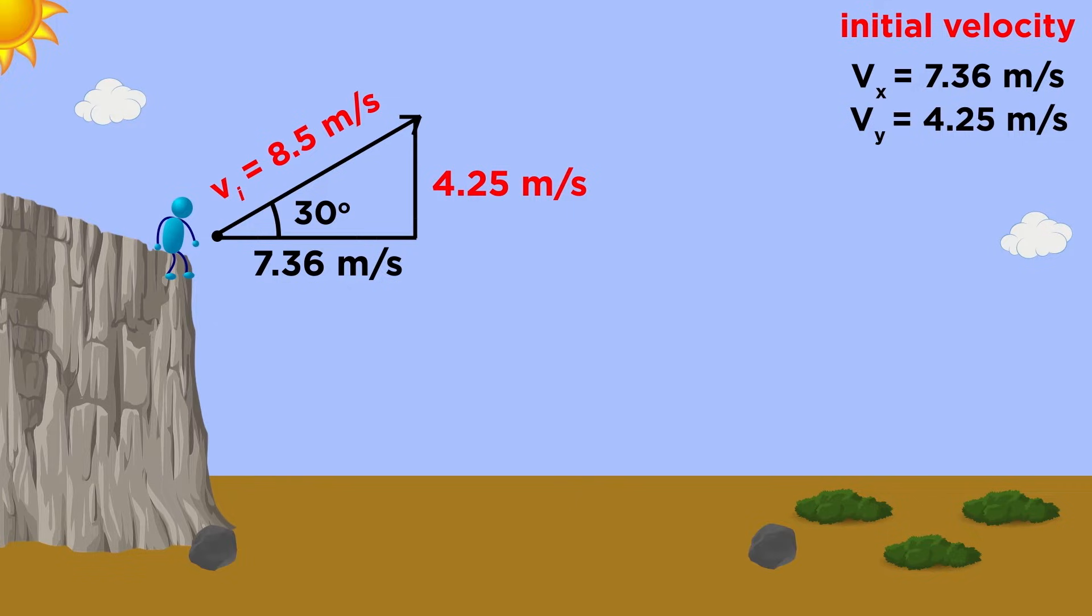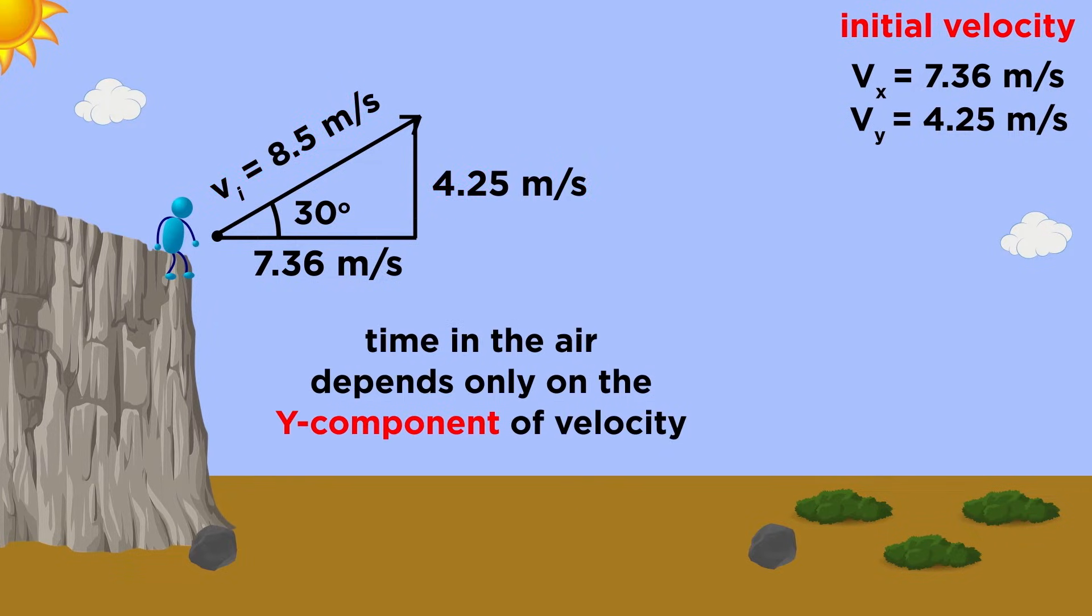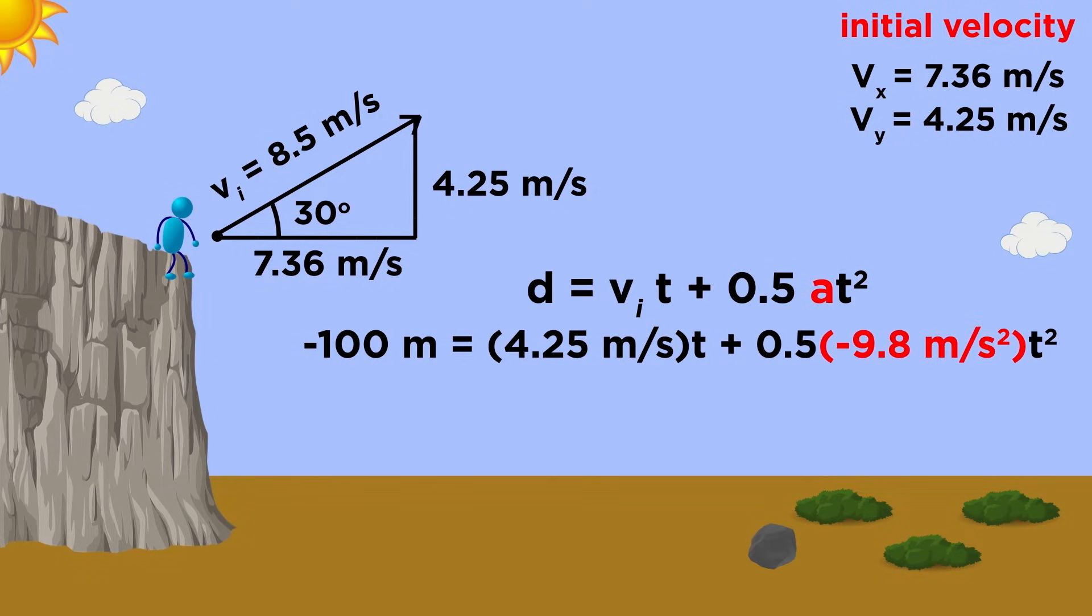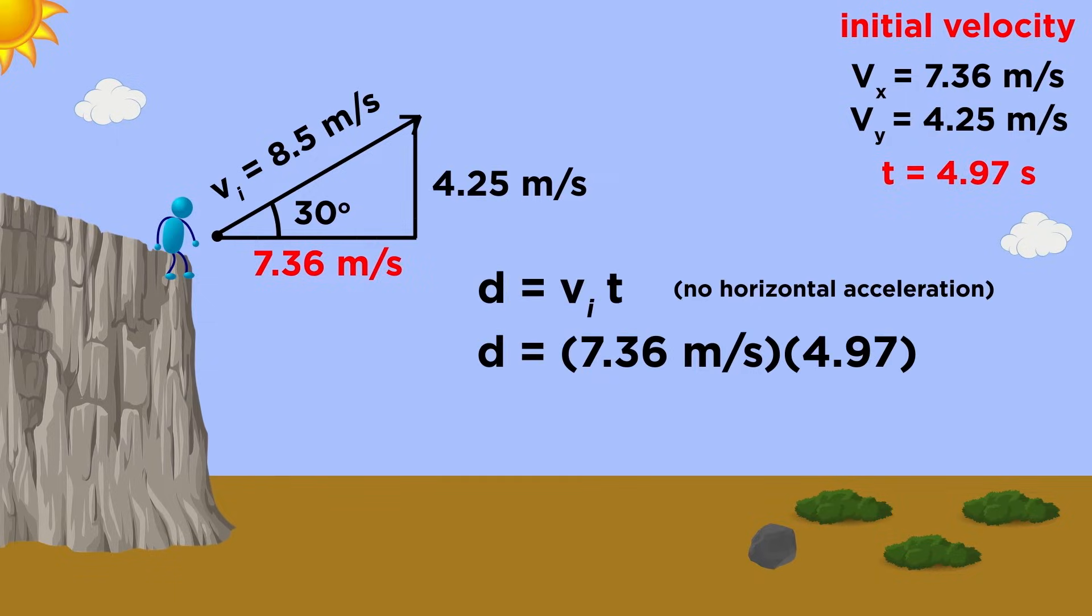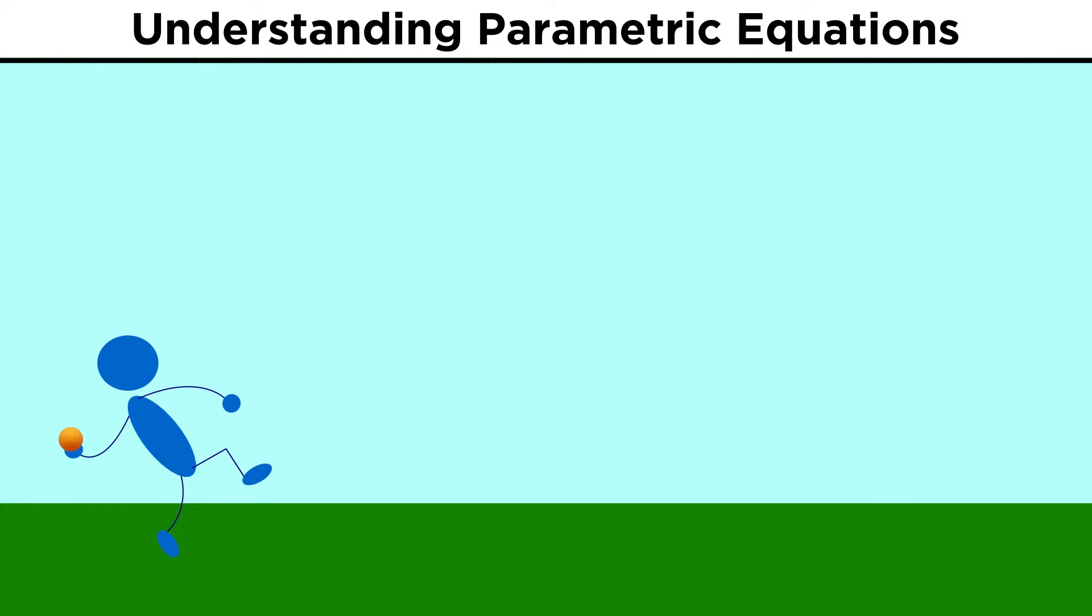The most common application of this involves two-dimensional motion of objects, like projectile motion. We learned all about this in the classical physics course, so you can head there if you want more information about this subject, but the basic gist of it is that when you throw a ball into the air at an angle, its X and Y motion are independent of one another.